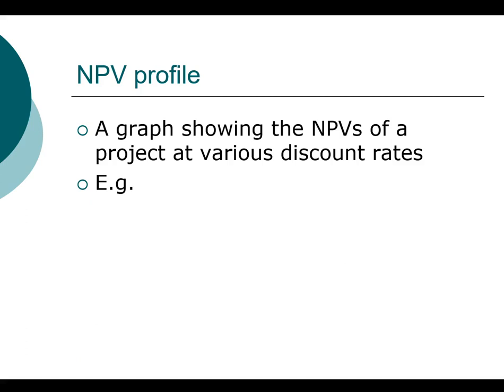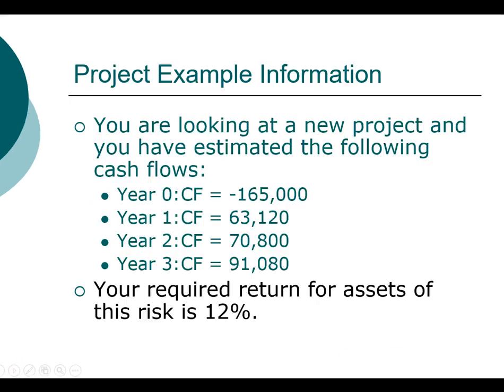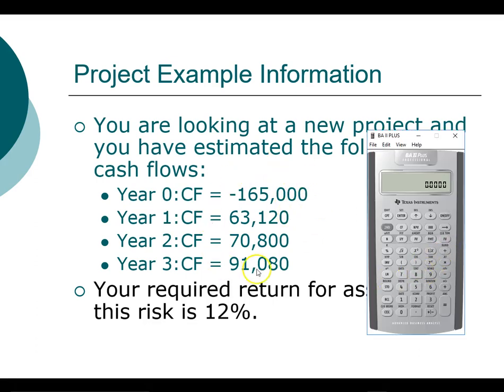So we can take a look at our example. We will use the numbers from the same example. To create the net present value profile, what we have to do is compute the net present value at different discount rates. Let's get our calculator. This time we're going to enter all the cash flows, including cash flow in year zero. So we start with cash flow, clear it, and put in cash flow in year zero, which is $165,000. It's an outflow because we're investing in this project.